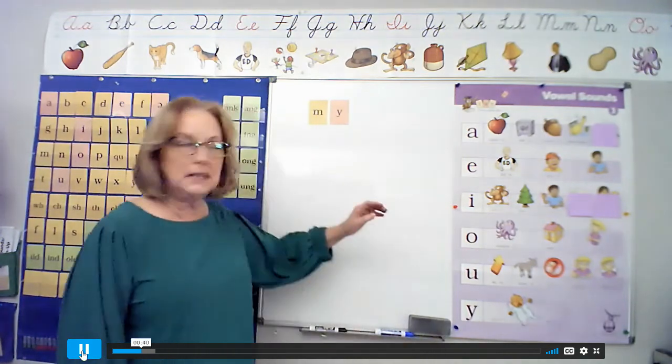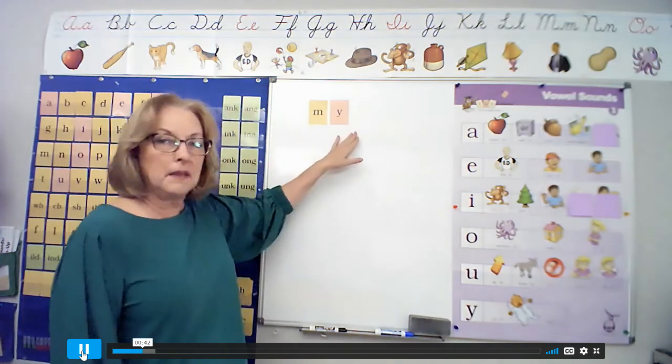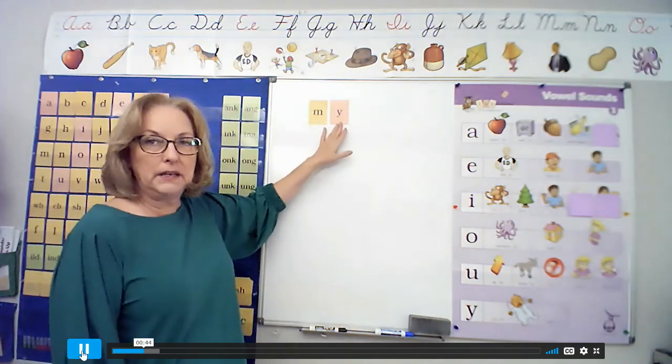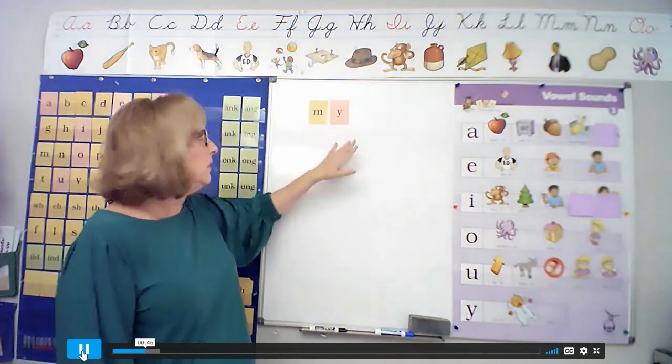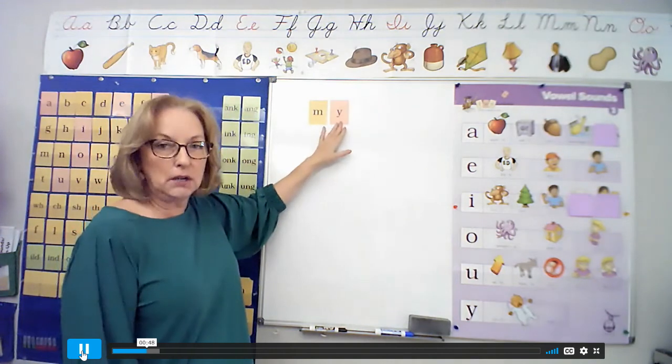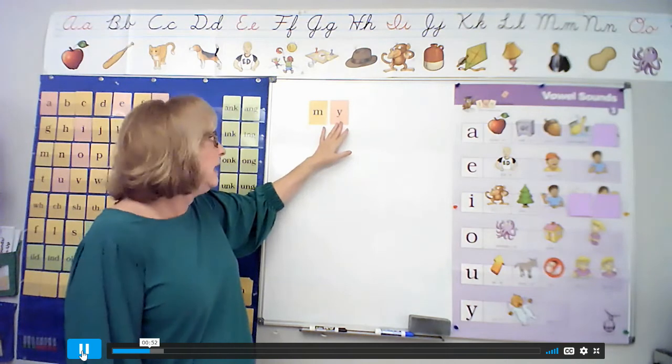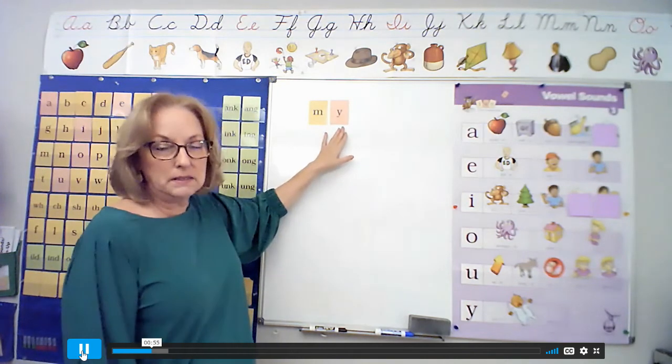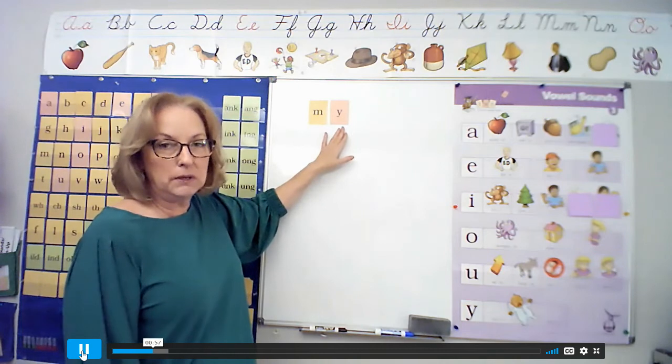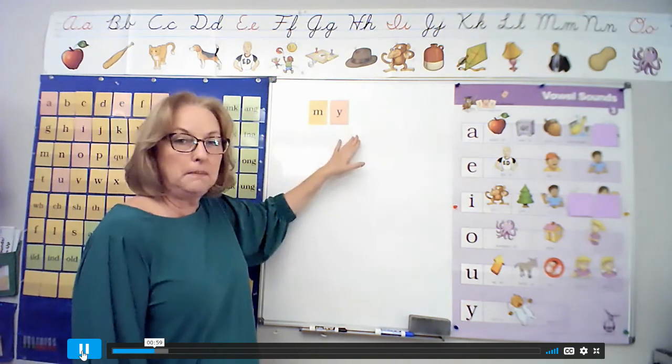You'll need your student notebook for today's lesson or your teacher may have sent home some pages of your student notebook. So if you need to pause the video to get your student notebook or other materials plus a pencil, go ahead and do that and I'll be here when you get back. All right, let's get started. I have a word on the board. Let's read it together. My. Y can be a vowel in an open syllable. And notice the vowel is on the peach card to represent that it's acting as a vowel in this word. And Y is going to say I in a one syllable, open syllable word, such as in the word my.